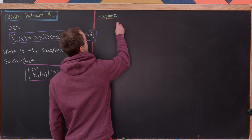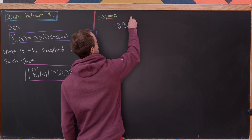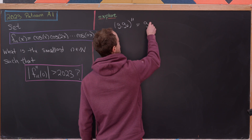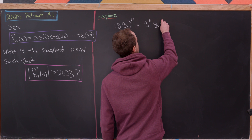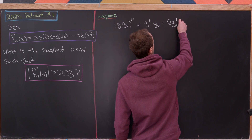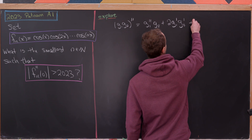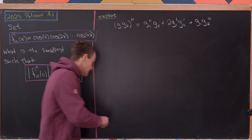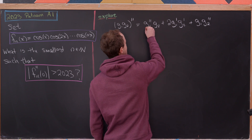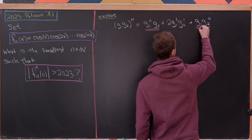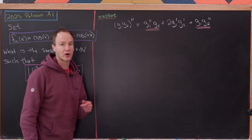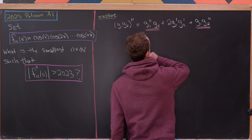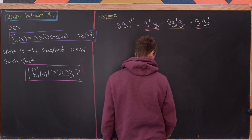Let's start by observing that if we have a product of g1 times g2 and we take the second derivative, we end up with g1 double prime times g2, plus 2 times g1 prime times g2 prime, plus g1 times g2 double prime. We have these two 'pure second derivative' terms, and then first derivatives spread out among the rest of the terms with a coefficient of 2.